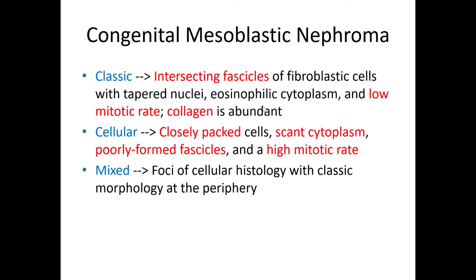The classic variant has the intersecting fascicles. The cells appear more fibroblastic with tapering nuclei, a relatively low mitotic rate, and more abundant collagen. The cellular variant, as the name suggests, is more densely cellular with less cytoplasm, causing increased cellularity; the fascicles tend to be less well formed, and the mitotic rate is high. You can view the classic variant as more of a low-grade sarcomatoid neoplasm and the cellular variant as more of a high-grade sarcomatoid neoplasm. Mixed means it has foci of both morphologies, with the classic morphology tending to occur on the periphery of the tumor.